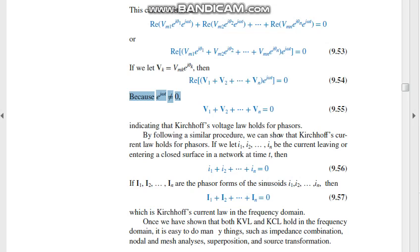After taking the real parts, e to the power j omega t is common. We know that e to the power j omega t can't be zero, so the phasor values will also be zero.